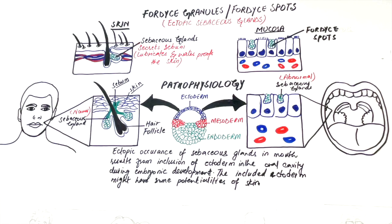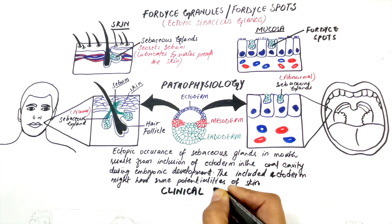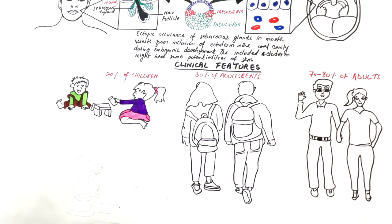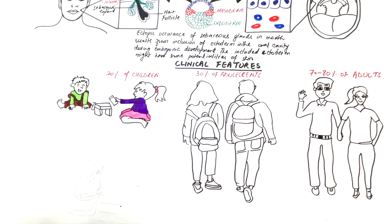Lesions are probably present at birth, but they do not become clinically evident until during or following puberty. Fordyce granules are found in 20% of children, 30% of adolescents, and 70 to 80% of adults. However, these glands may actually disappear altogether in elderly individuals.